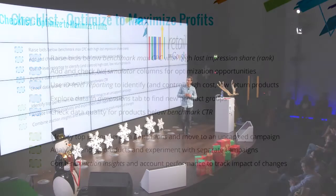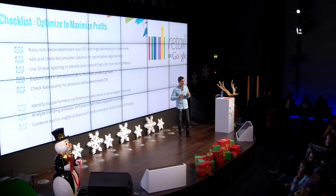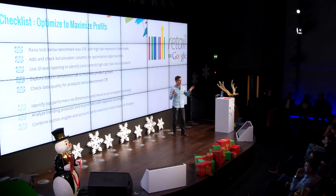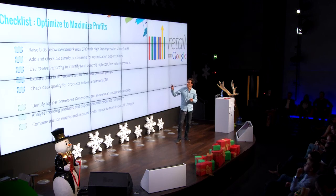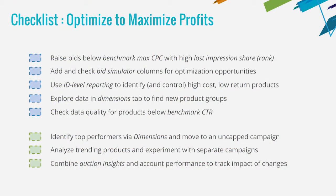Let me sum up what I've been talking about — the balance between increasing ROAS and uncapping sales. A few takeaways: try to play with your bids, try to look at how the benchmark is performing, try to look at bid simulator columns — those are very powerful metrics. For reporting, try to do that on the attributes that you're using to structure your campaign. It's also important to check data quality and benchmark CTR to understand consumer behavior when they see one of your products. The other bucket is to uncap the sales volume for your top performing products, using Google Trends and the auction insights in order to know better how your mobile PLAs are performing. Thanks a lot for your attention.